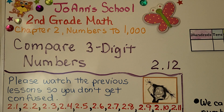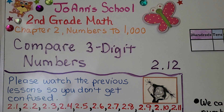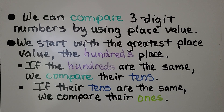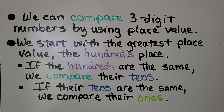Lesson 2.12: Compare Three-Digit Numbers. We're going to talk about the less than, greater than, and equal to symbols in this lesson. We can compare three-digit numbers by using place value. We start with the greatest place value, the hundreds place.